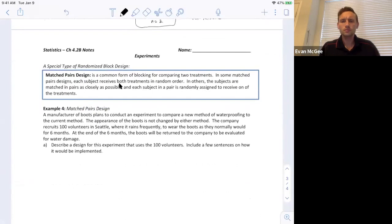So a matched pairs design is a common form of blocking for comparing two treatments. In some matched pairs, each subject receives both treatments in random order. In others, the subjects are matched in pairs as closely as possible, and each subject in a pair is randomly assigned to receive one of the treatments.